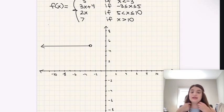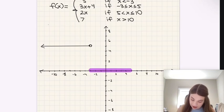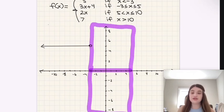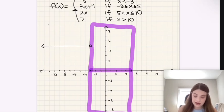Next one is 3x plus 4. And that is for this area over here, everything starting at negative 3, going up to 5. So all of this area here, we're going to be drawing this graph. So how do we draw 3x plus 4 again? Well, if we're not sure, I'll go through it briefly, but I do also have some videos on graphing linear functions as well. But long story short, how are we going to graph 3x plus 4 in general?